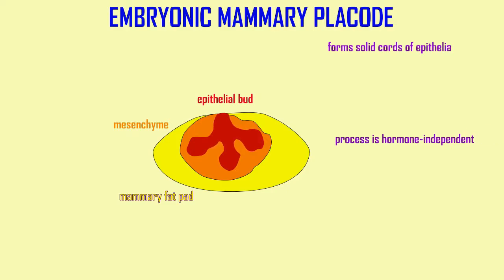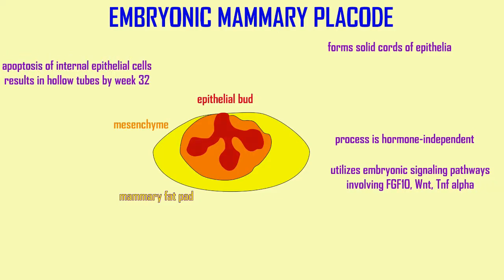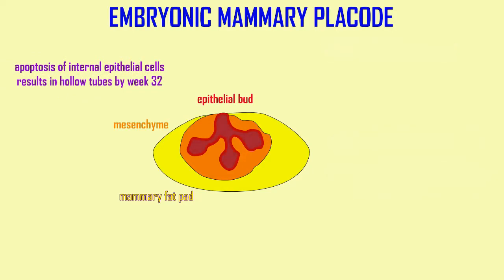On the remaining mammary placodes — those regions of the mammary line which will form mammary glands in that specific species — at first, solid cords of epithelia are formed, and this process is hormone independent, not relying on estrogen or prolactin.